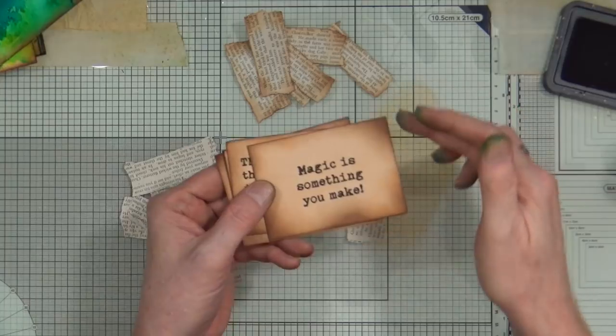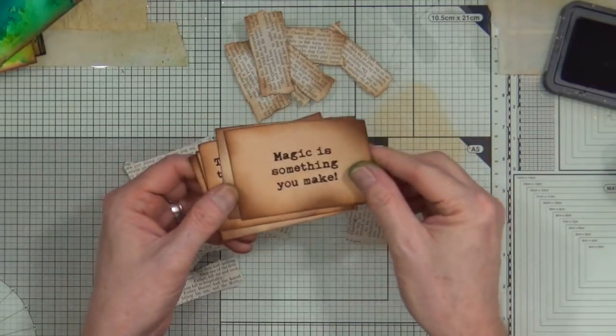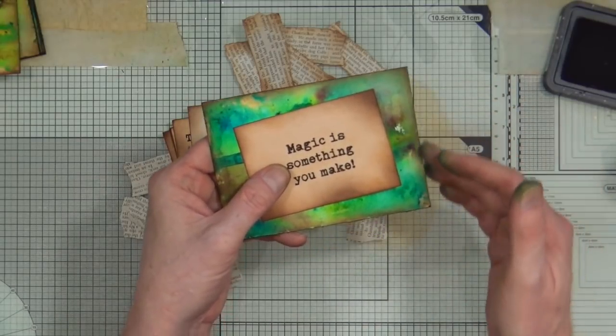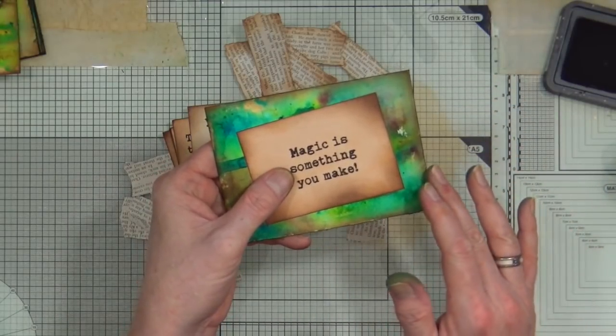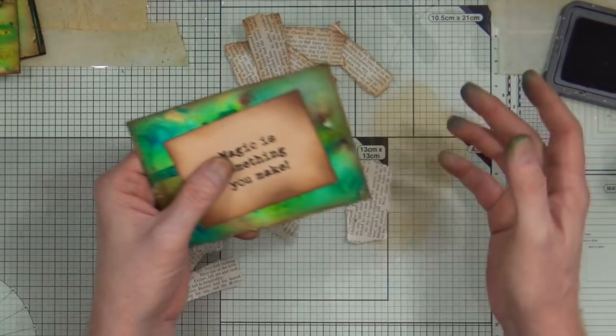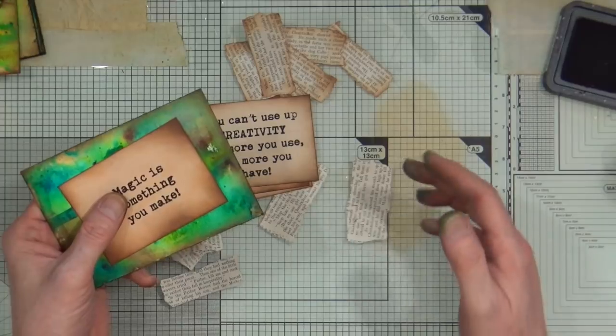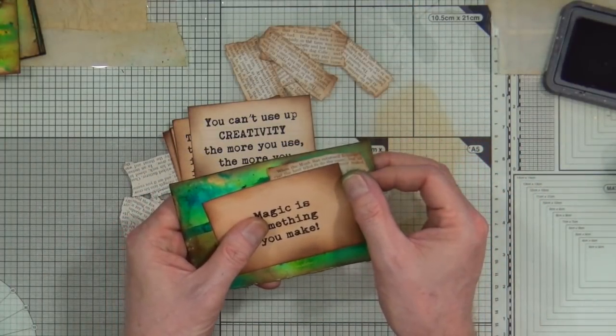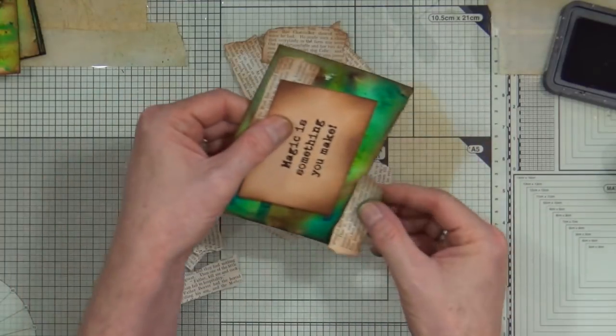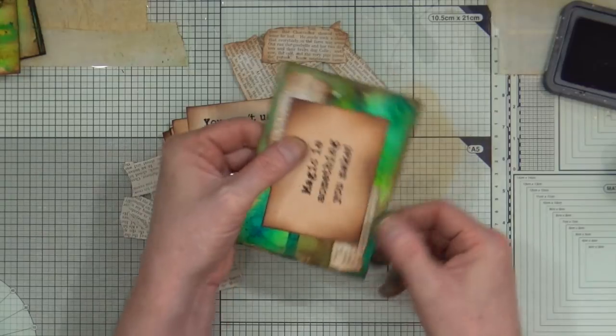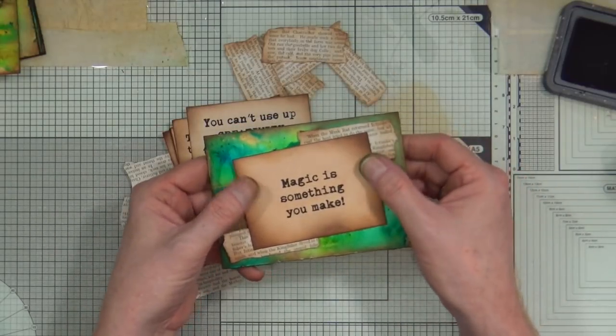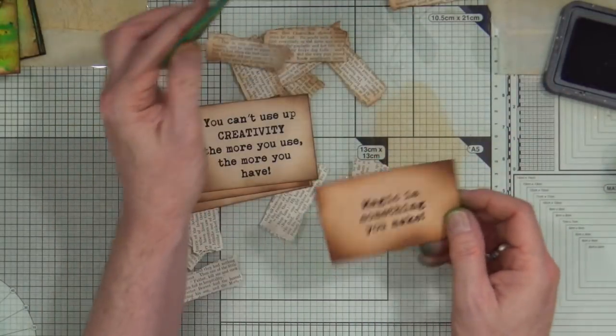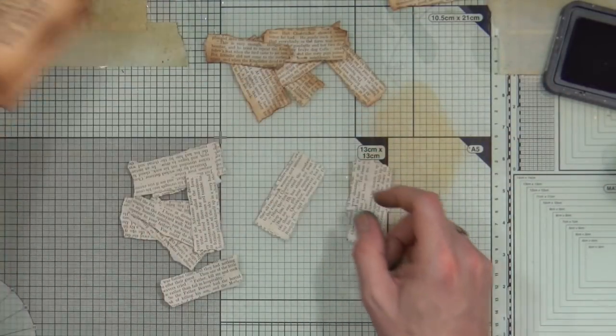So as you can see, I've gone around all of the edges distressing it and making it a bit more grungy. Let's just bring in one of those sheets there so you can see now that with those dark edges round the background and the dark edges there, it's starting to kind of pull itself together. But you've seen all these pieces of book text as well. What I want to do is to add just a couple of pieces of book text just behind each one, just tucked in the corners, just to kind of break it up a little bit.